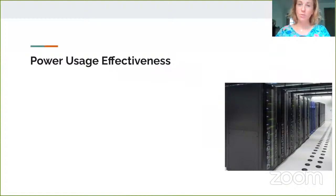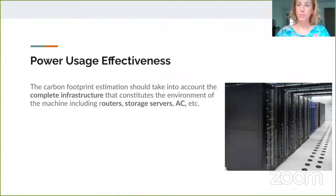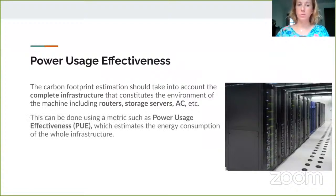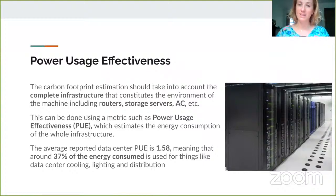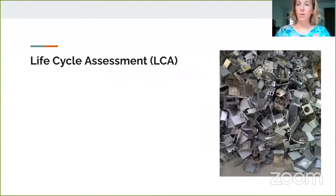There's also the really important concept of Power Usage Effectiveness (PUE). For example, when training in a big server farm, you'll have significant overhead including powering routers, storage servers, and air conditioning because servers emit a lot of heat. In order to have an estimate, you can use a metric like PUE, which estimates the energy consumption of the whole infrastructure. On average, the reported PUE is 1.58 worldwide, meaning that 37% of the energy consumed goes to things like data center cooling, lighting, and distribution — that has to be added on top of the direct emissions of your model. And something not yet well understood in machine learning is the whole life cycle assessment (LCA), a methodology that estimates the environmental impact accounting for the full life cycle of hardware, including fabrication, transportation, maintenance, and disposal of servers and chips.